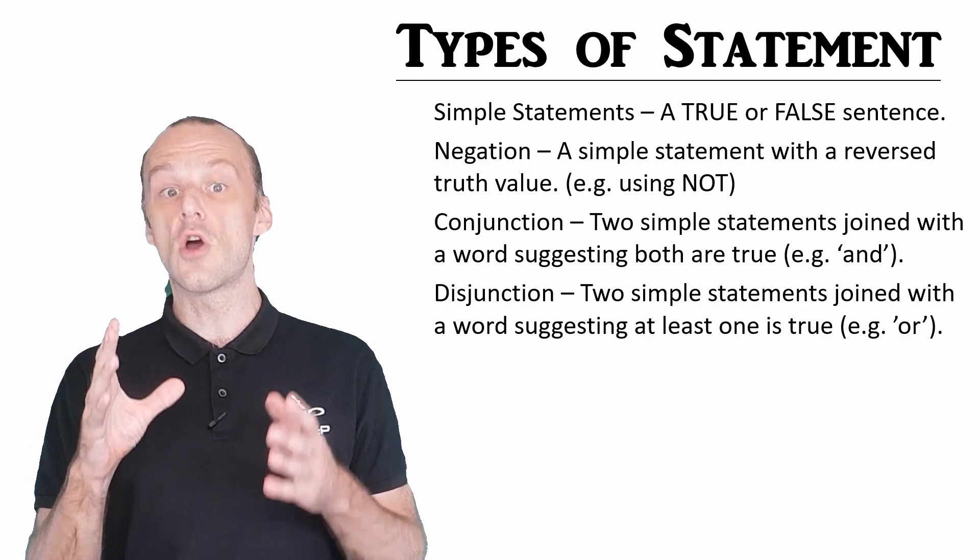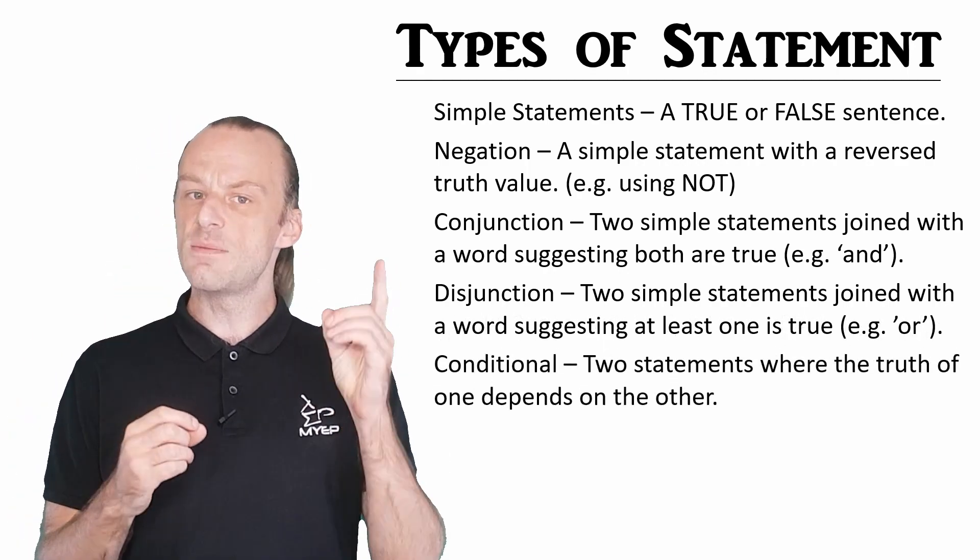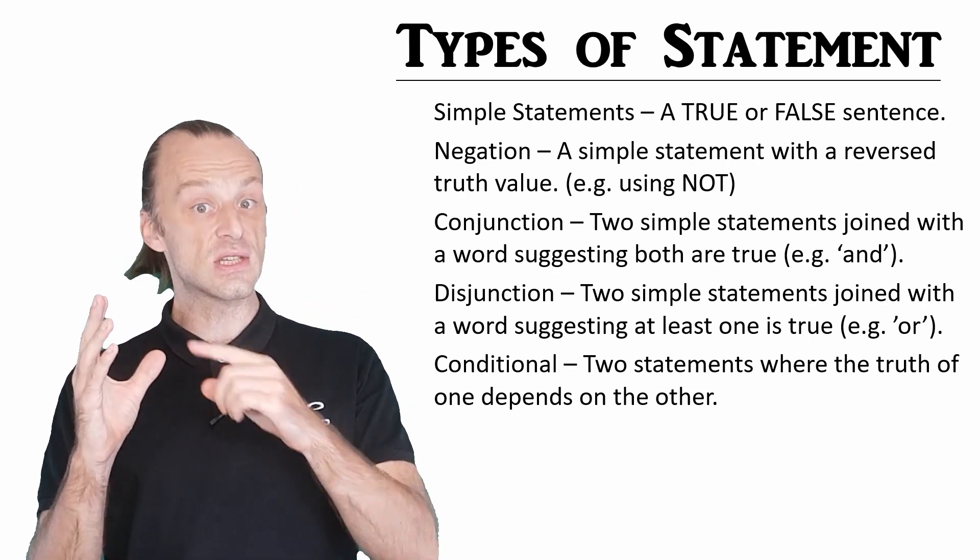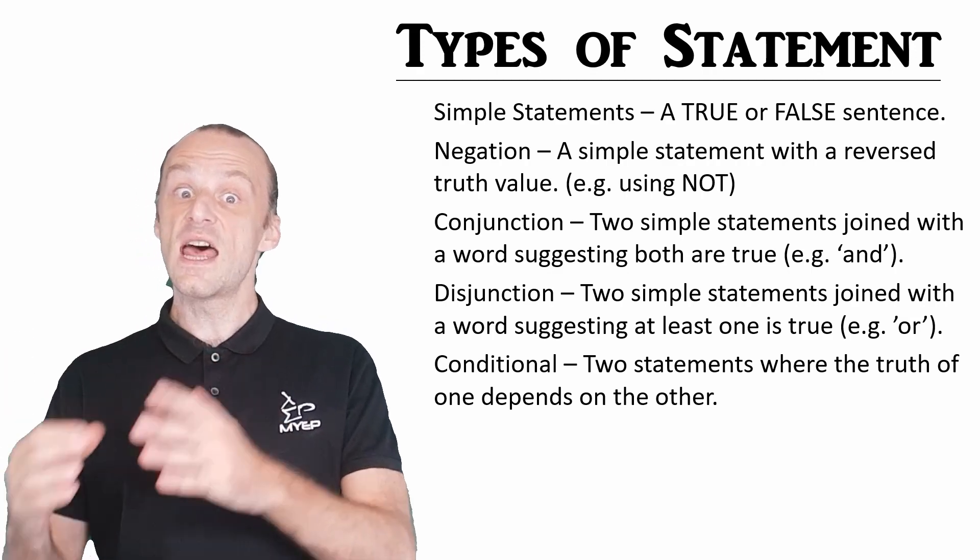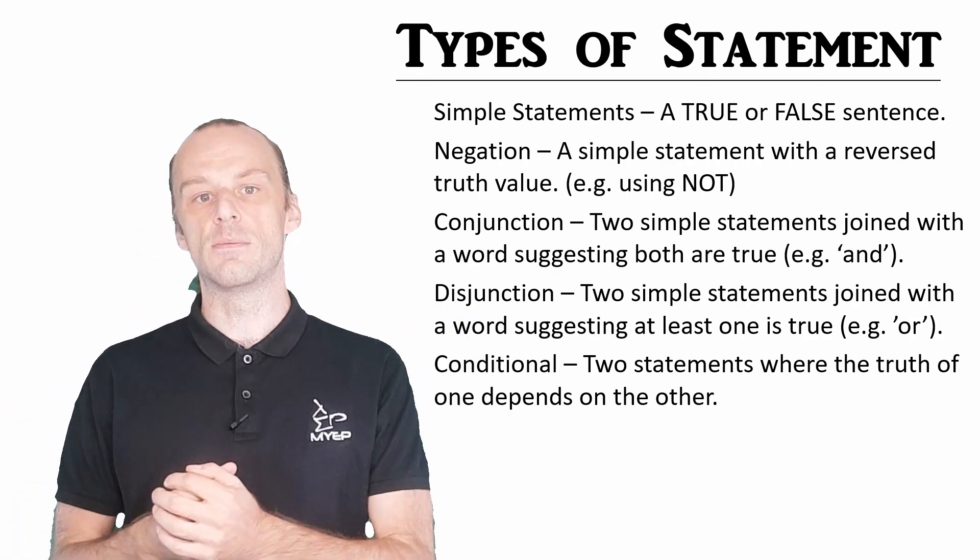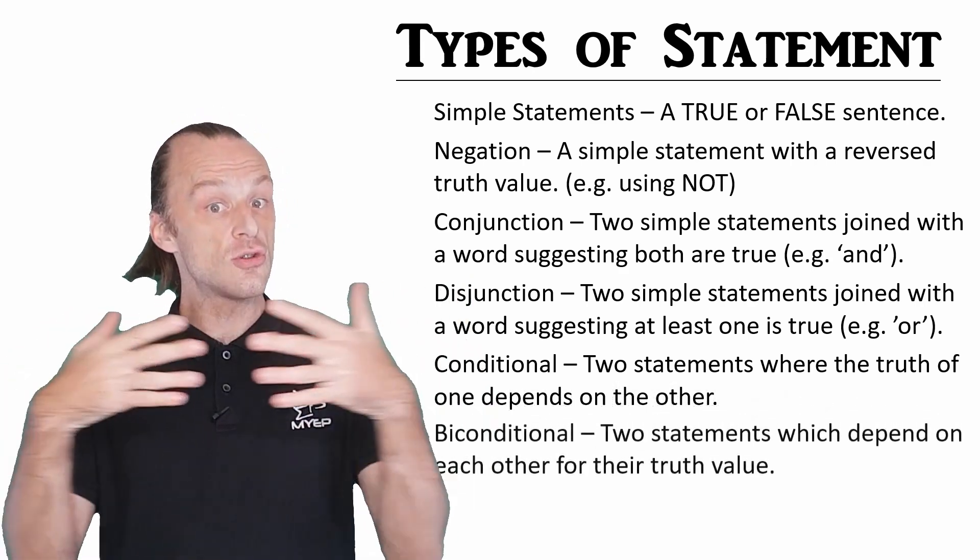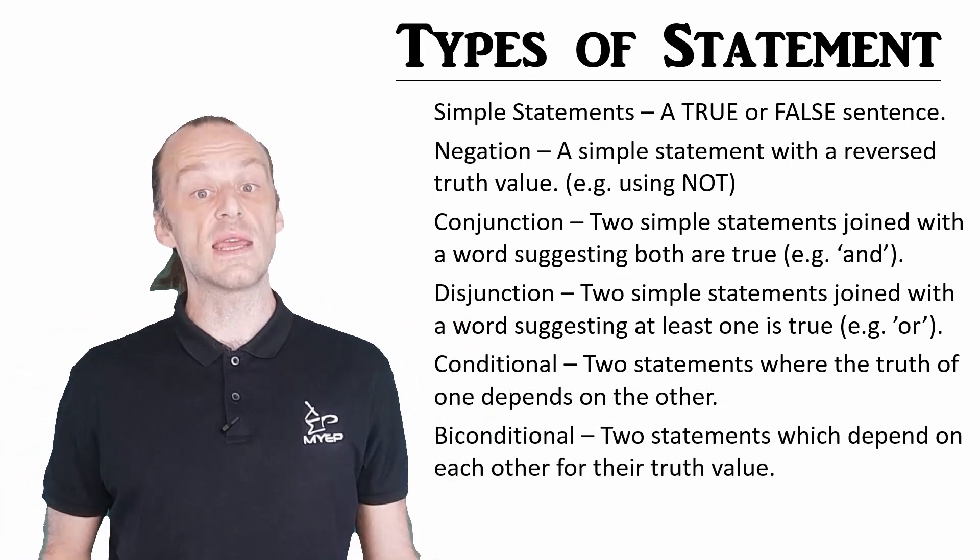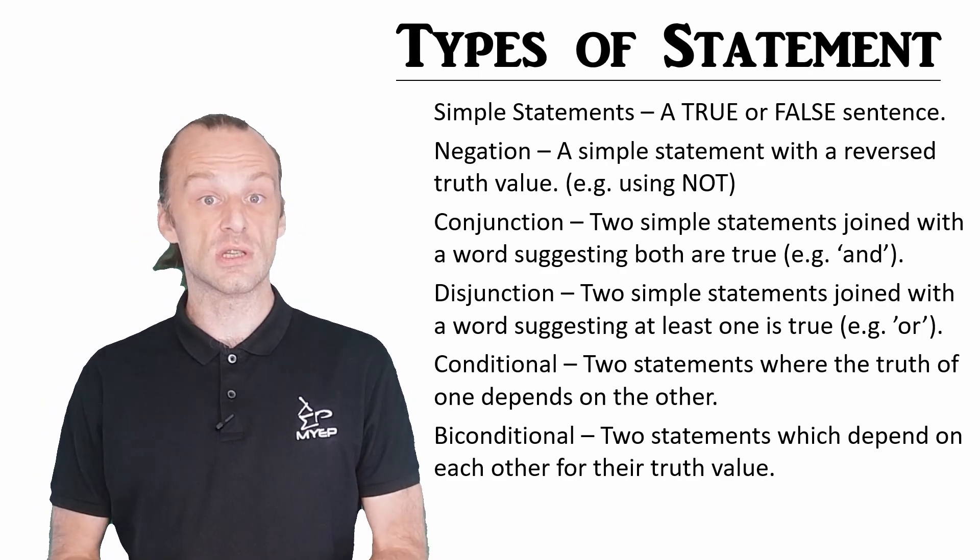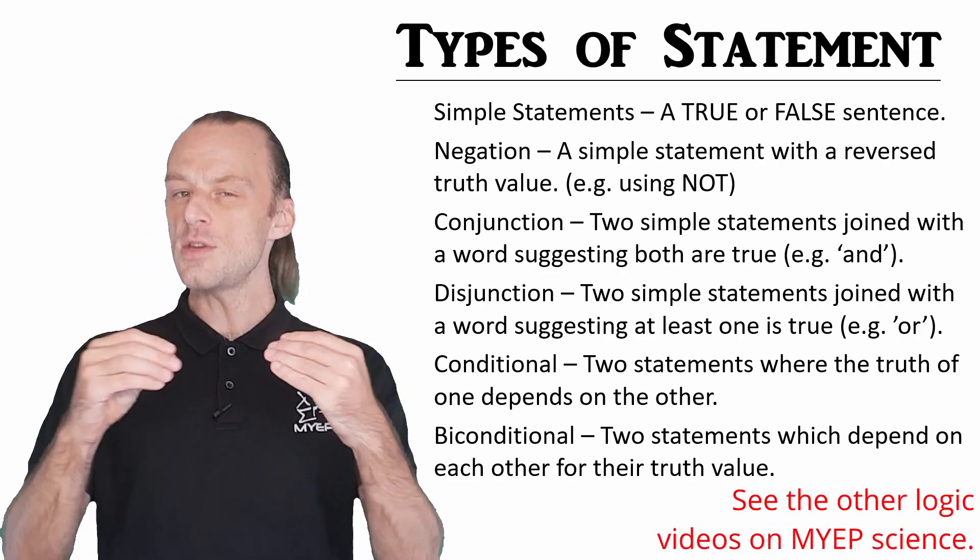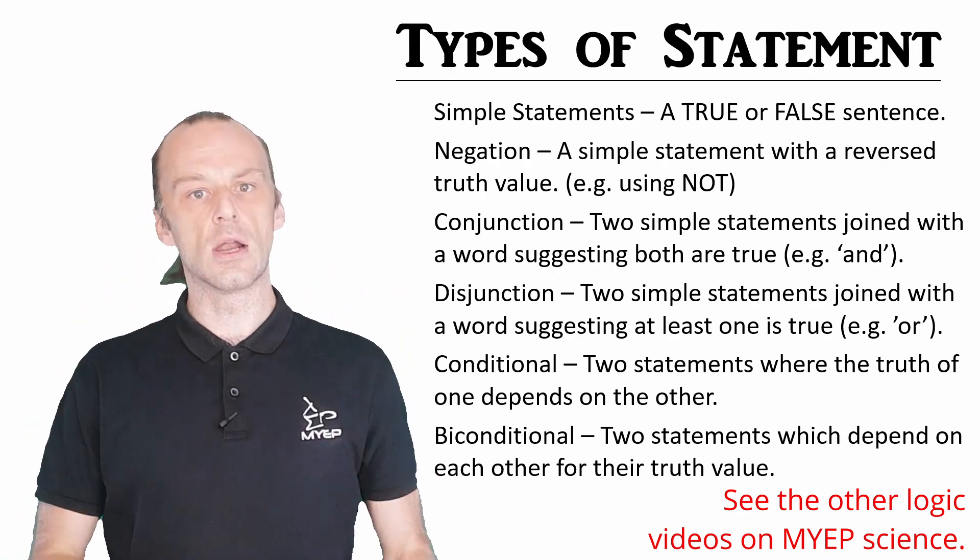Another type of compound statement is the conditional. This says that the truth of one statement depends upon the truth of another statement, such as when we say that if one thing happens, then something else will happen. Finally, there is the biconditional, which makes a two-way conditional between statements, so the if-then relationship will go in both directions. Now we'll go through each of these in more detail, along with how we use them in doing logic.